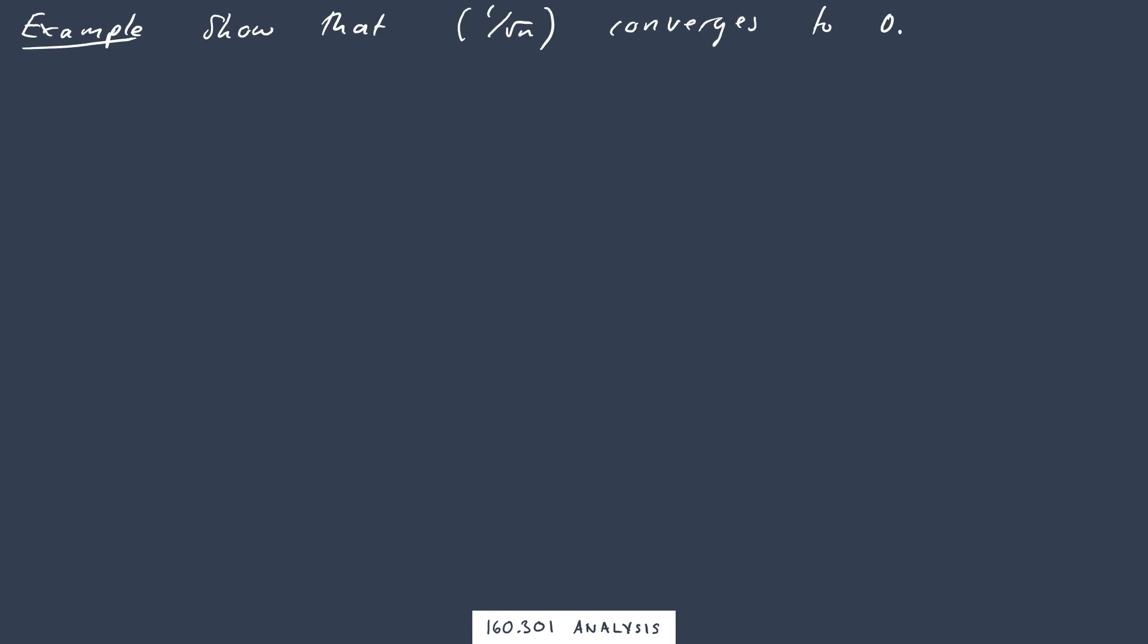So let's use the definition to show that the sequence 1 over root N converges to 0. So notice when we're using the definition of convergence of a sequence, we need to know the number that it converges to ahead of time. So how are we going to do this? Well, the basic pattern is we choose epsilon greater than 0. So choosing an epsilon,